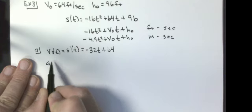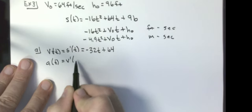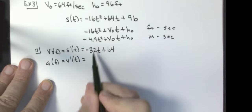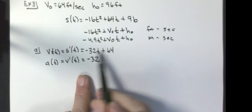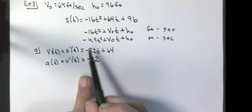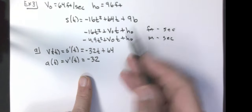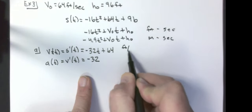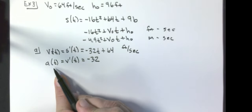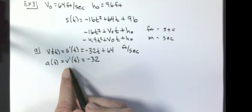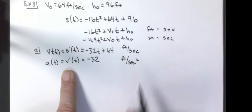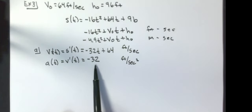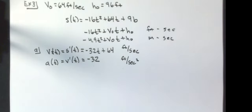My acceleration function A sub T is equal to the derivative of my velocity function. Taking the derivative gives negative 32. The units of my velocity function are the units of position divided by time — so this is feet per second. The units of my acceleration function are velocity divided by time, so feet per second squared. You should recognize negative 32 feet per second squared as the gravitational constant on Earth — that's why that equation works.